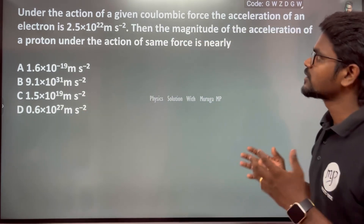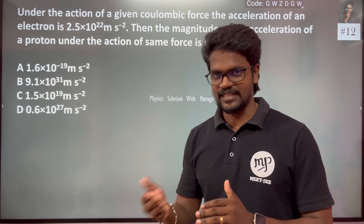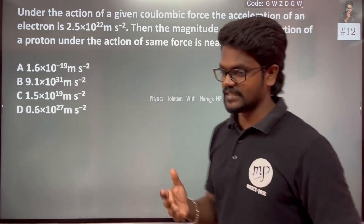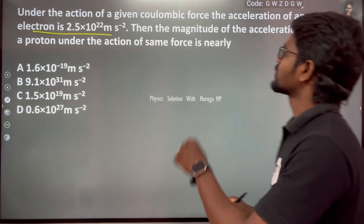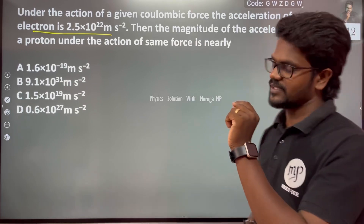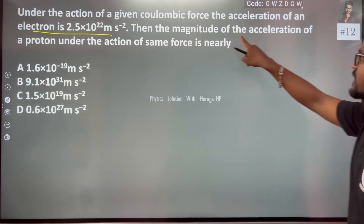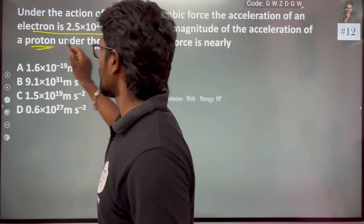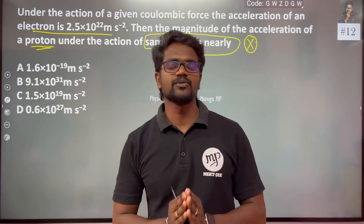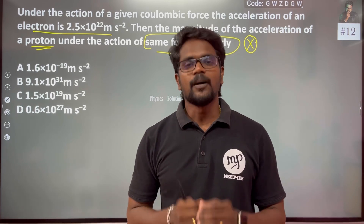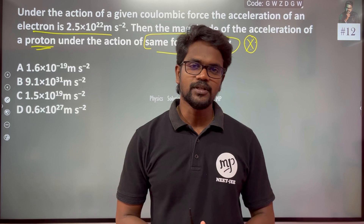Under the action of a given Coulombic force — that is, the electrostatic force — the acceleration of an electron is given. We need to find the magnitude of the acceleration of the proton under the action of the same force. The electron acceleration is 2.5×10²² and we need to find the proton acceleration. Force is the key word here.